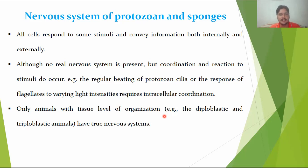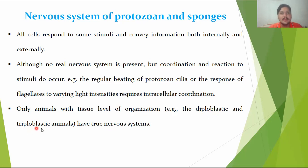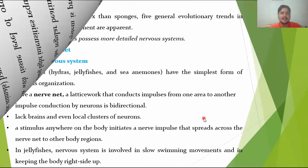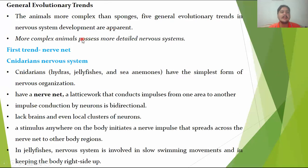Diploblastic animals have two germ layers — 'di' means two, 'blast' means layers. Triploblastic animals have three layers: 'tri' means three, 'blast' means layers. These are the ectoderm, the middle mesoderm, and the endoderm. These triploblastic animals have a true kind of nervous system, and there are many evolutionary trends for the nervous system.